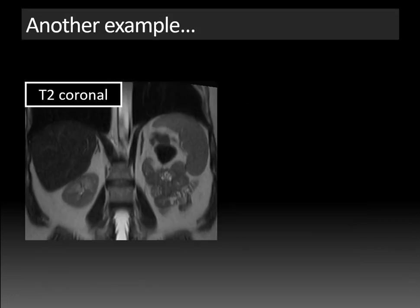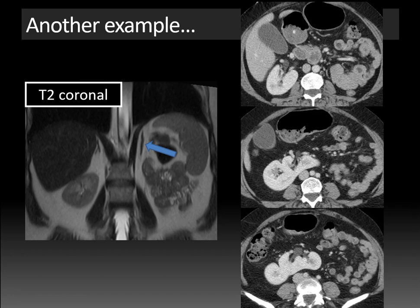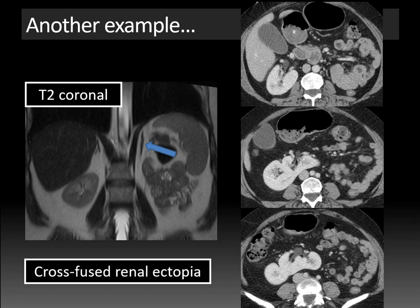Looking at another case, this T2 coronal MRI image shows a normal right adrenal gland with that lamdoid configuration, but the left adrenal gland has a very vertical, linear, disc-like configuration. There is a normally positioned right kidney, but the left kidney is absent from its normal location. CT of the abdomen shows that the left kidney is actually fused to the lower pole of the right kidney — known as cross-fused renal ectopia — which explains the developmental variant linear adrenal gland on the left.